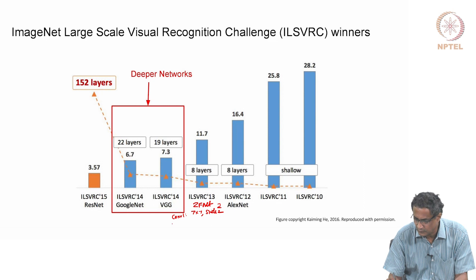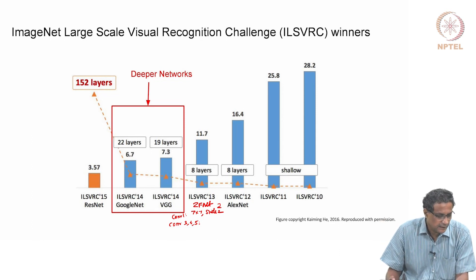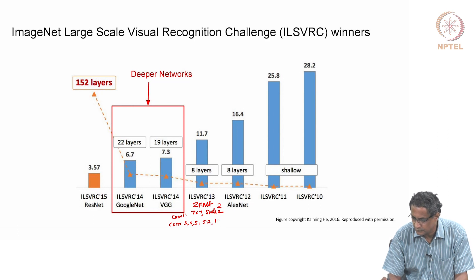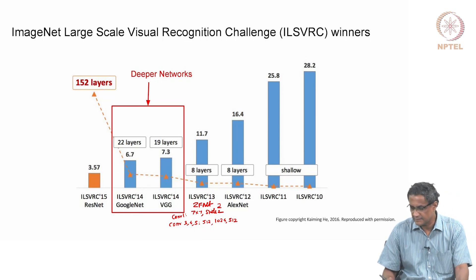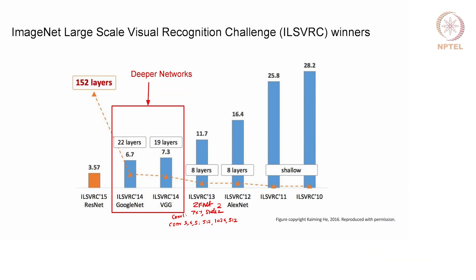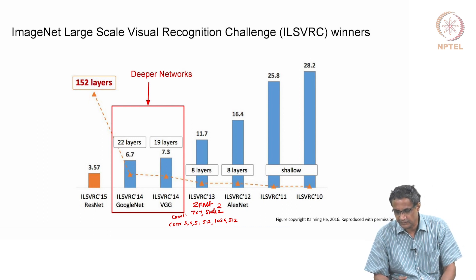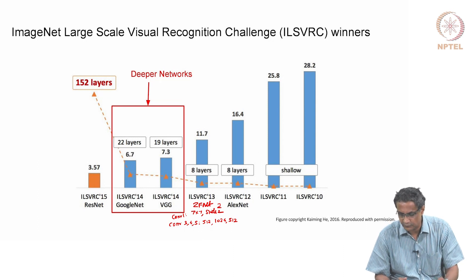With respect to conv layers 3, 4, and 5, AlexNet had filters of size 384 and so on. ZFNet changed those to 512, 1024, and 512 — these are numbers of channels, or feature maps. They played around with those numbers and found that using more feature maps improved performance. The basic architecture skeleton remained the same, but the number of feature maps and filter sizes were changed.